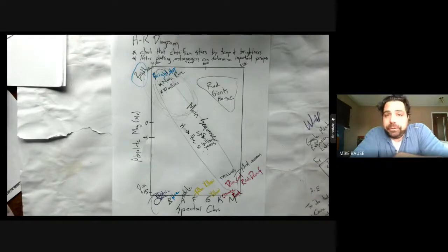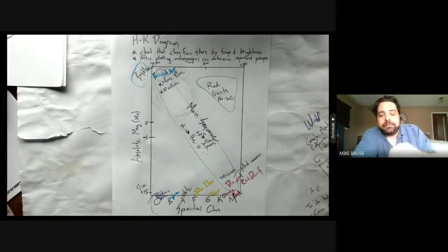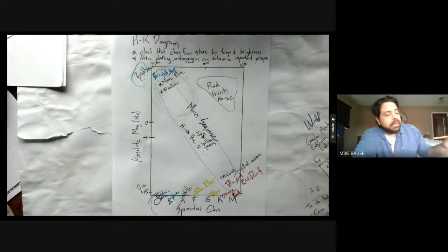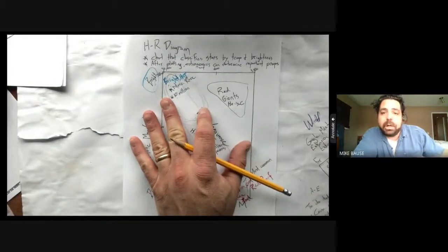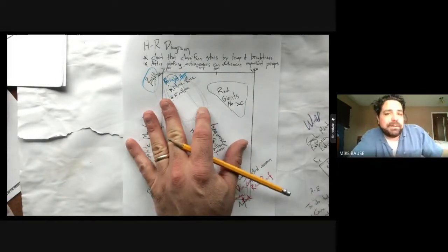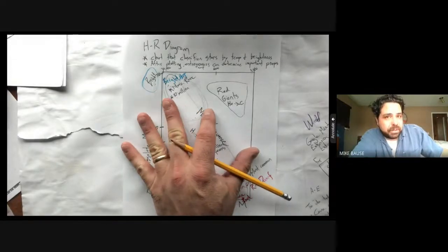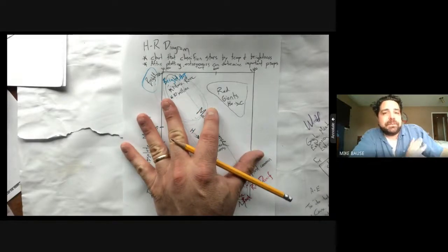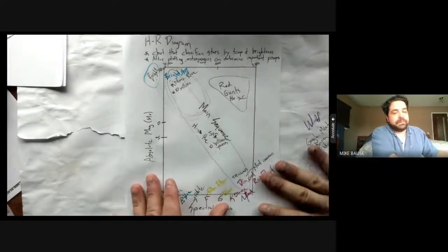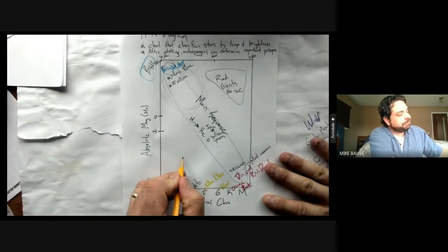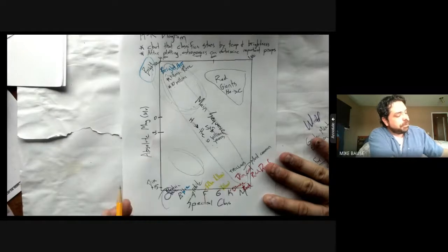When a red giant runs out of fuel, some of them will disappear off the HR diagram. They'll no longer be on it. And we'll talk about why when we talk about the death of high mass stars. But the vast majority of stars, when they run out of helium, are going to move to this bottom left section down here.